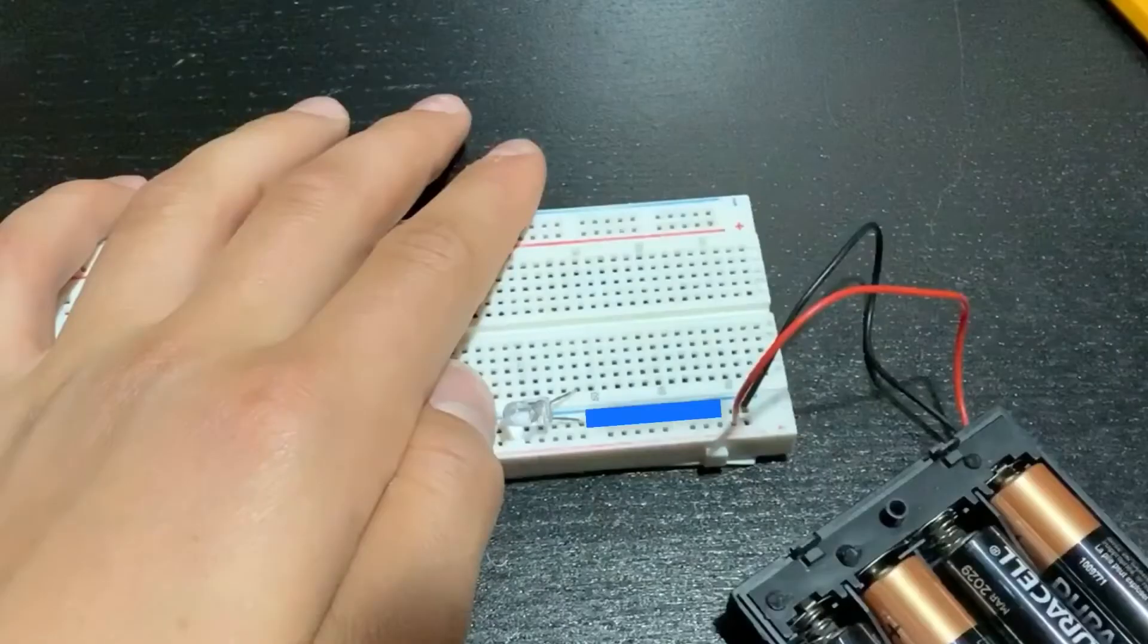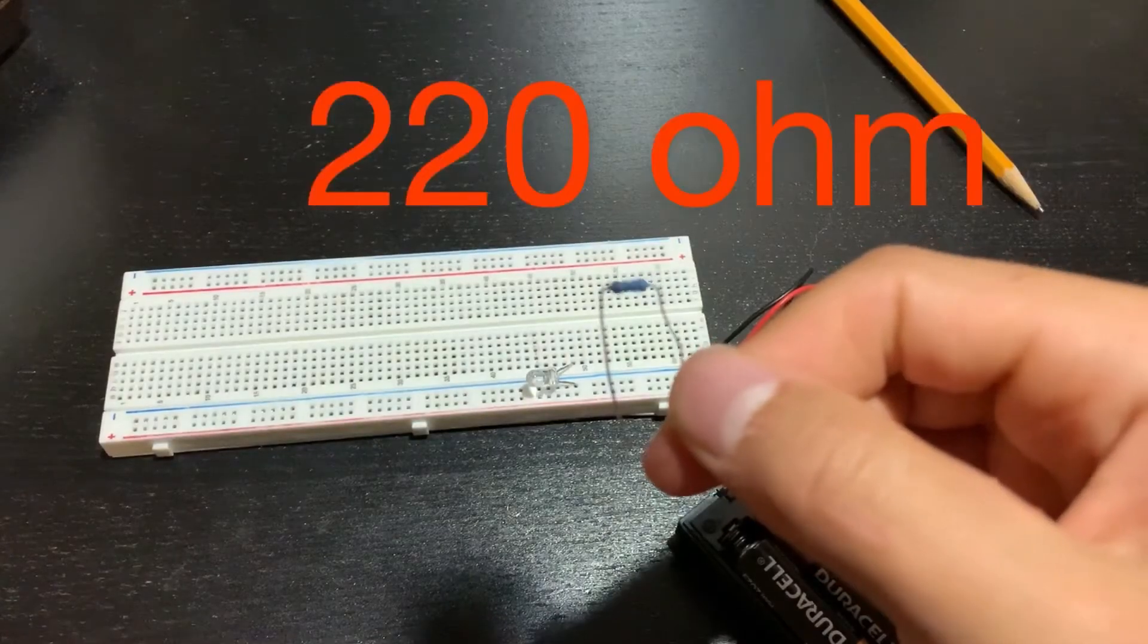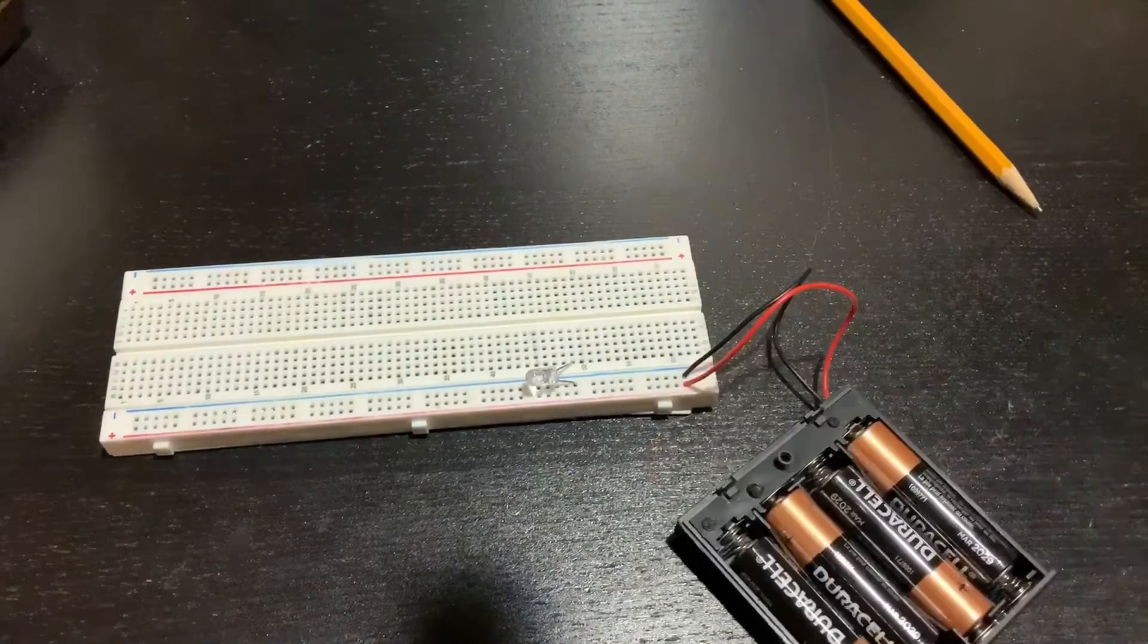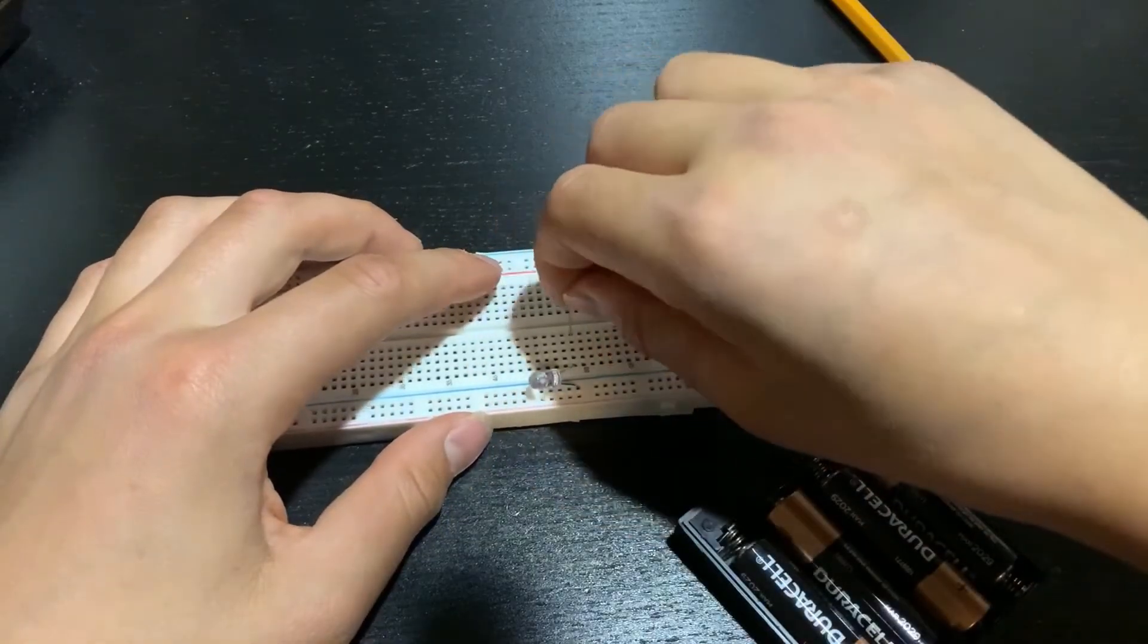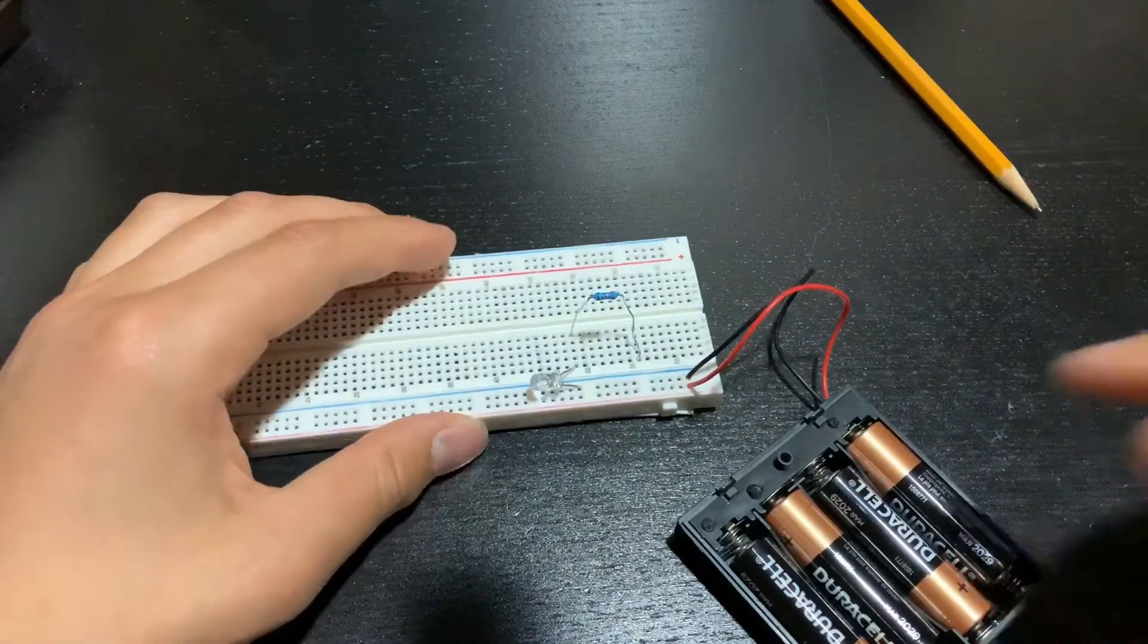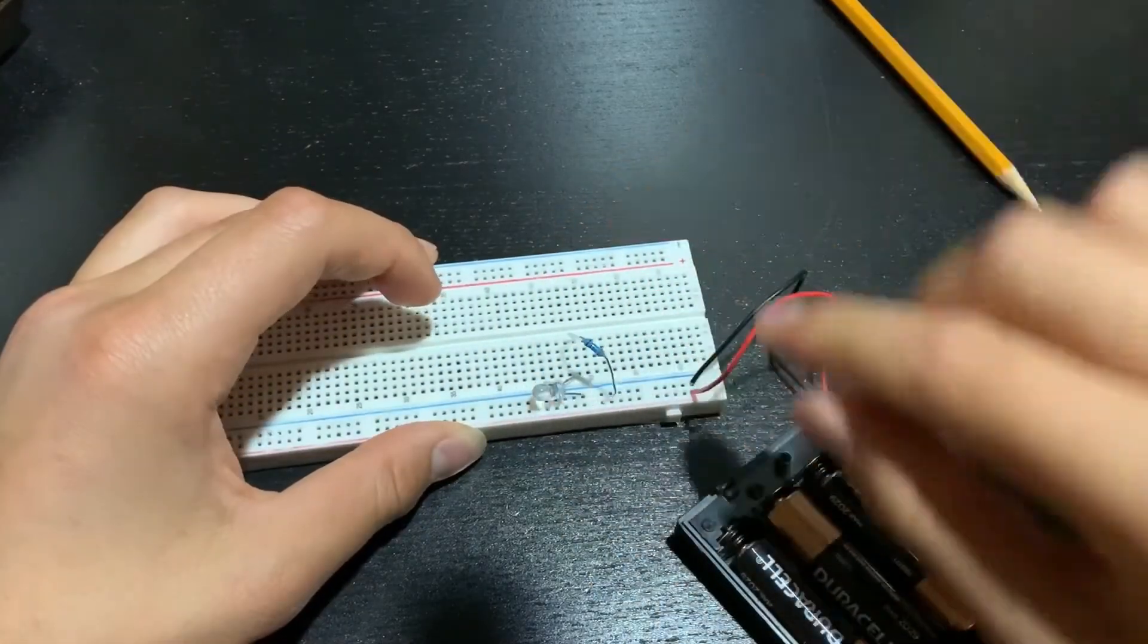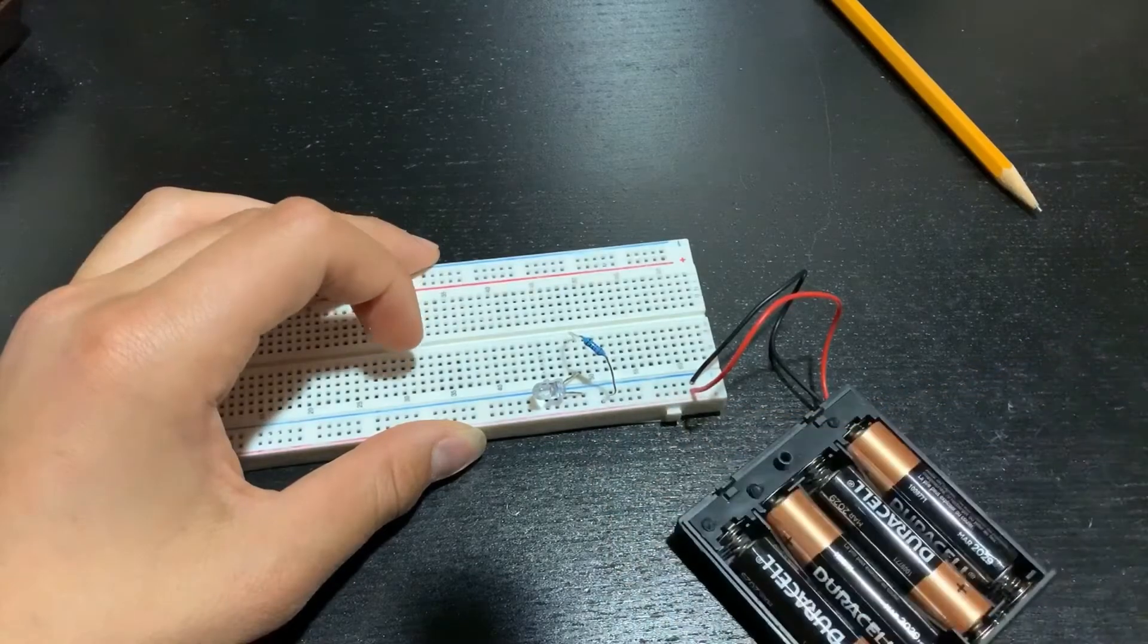Now these two pins will be connected. Now we're going to add a resistor. Since resistors don't have polarities, it doesn't matter which way they're oriented. One end will go across from the LED, and one end will go to the positive rail. Now this rail is connected. And the circuit is complete.